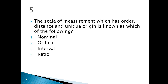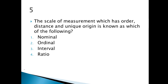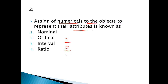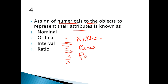Now, in my YouTube class and Unacademy class, I covered all types of data. Let's go to this question. When numerical numbers are assigned to attributes — for example, here there are three students: Rekha, Reno, and Pakhi — these are students. If I say someone is one, it means they come first; second means they come second. We know their ranking and their marks.